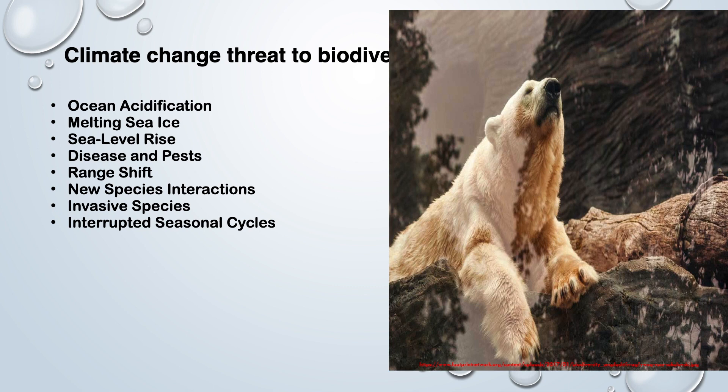New species interaction: The climate-induced variation of species range and related biome shift cause previously unacquainted species to come into contact with each other. This results in competition for resources and changes in the way predators interact with their prey. For example, red foxes have moved northward toward a warming tundra and compete with native arctic foxes.